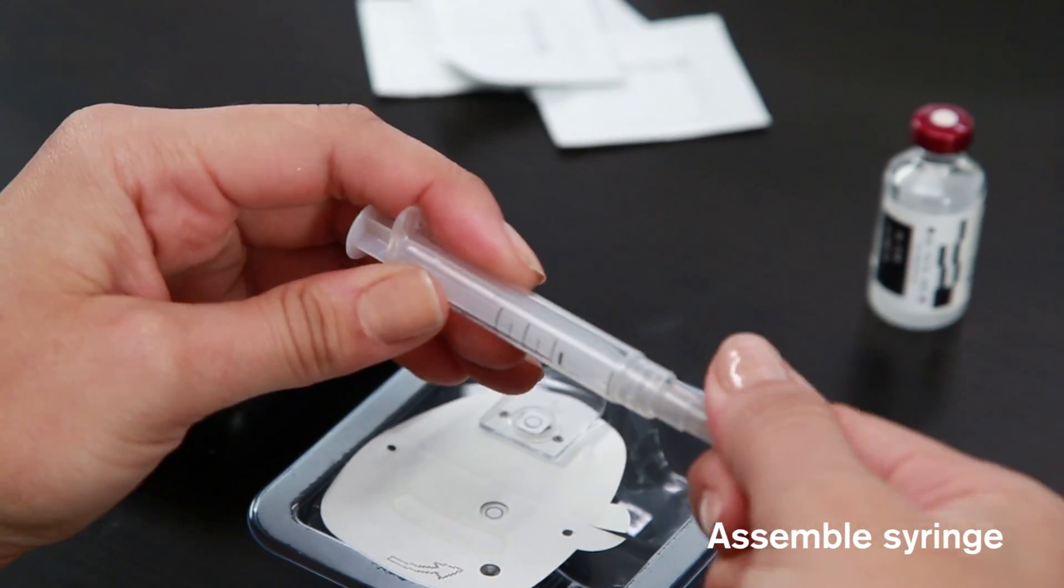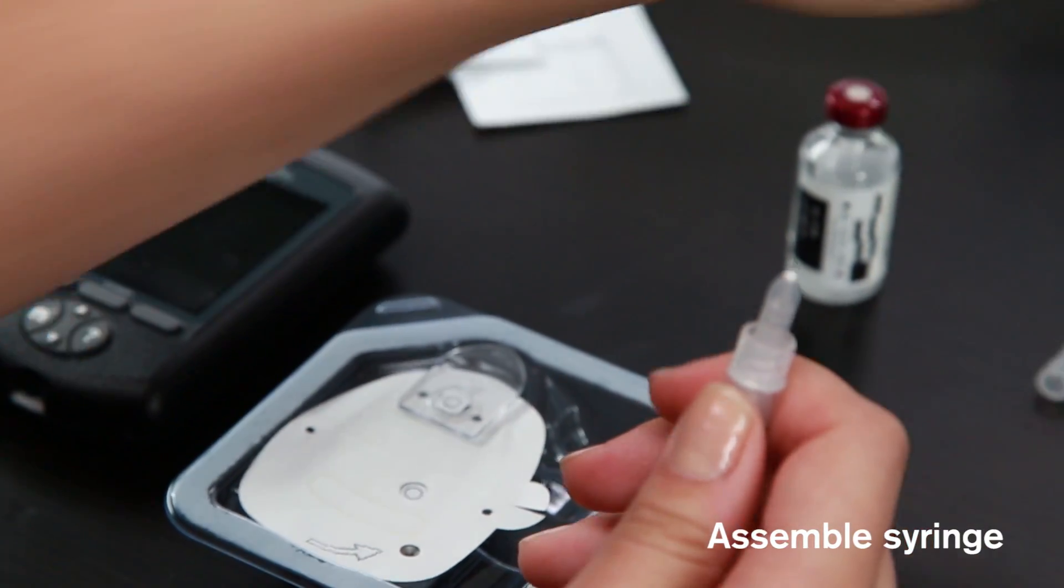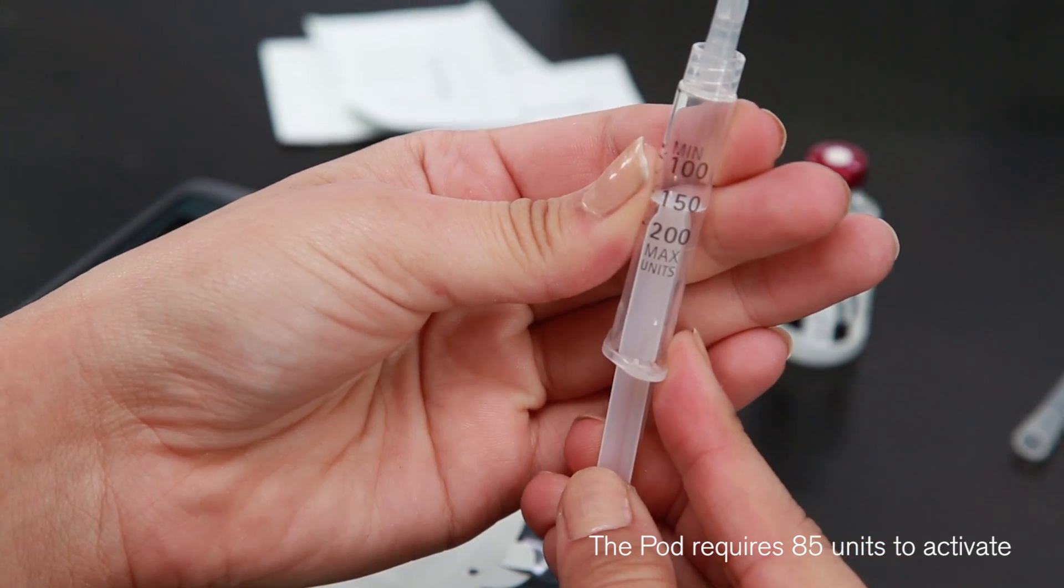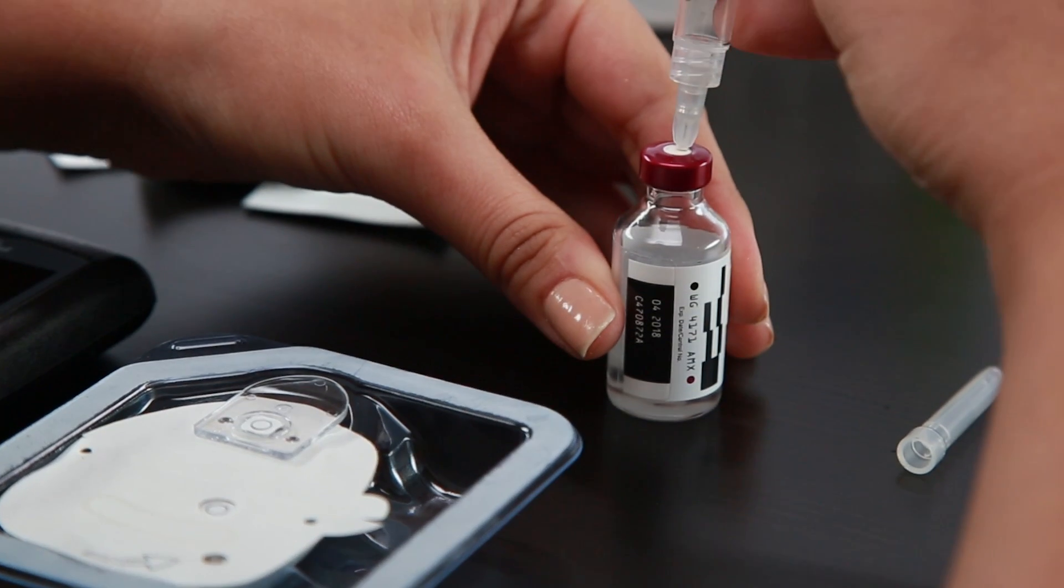Assemble the fill syringe by twisting the needle onto the syringe and then remove the protective cap. Draw air into the fill syringe equal to the amount of insulin you intend to fill the pod with. Depress the air into the vial of insulin.